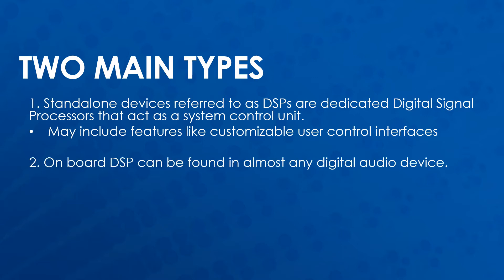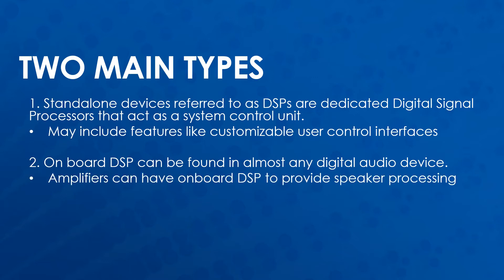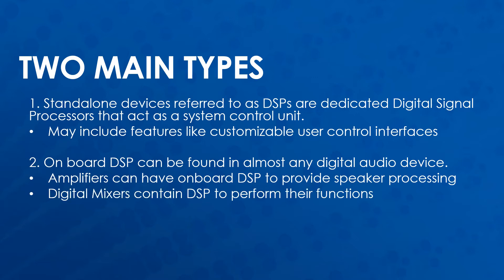Onboard DSP can be found in almost any digital audio device. These are generally less powerful and are dedicated to performing specific functions. For example, amplifiers can have onboard DSP to provide speaker processing for each output channel. Digital mixers also have onboard DSP to perform their functions.